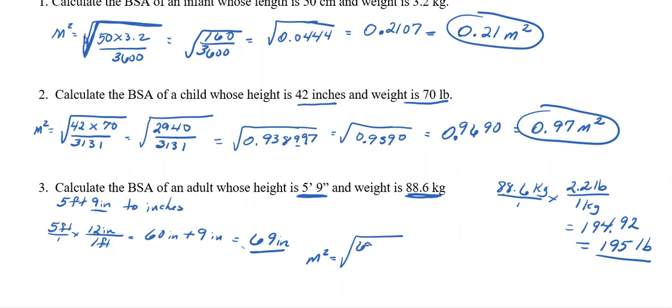So I've got 69 times 195 over 3,131. So 69 times 195 gives me 13,455. Divide that by 3,131. And I'm going to get the square root of 4.2973. And when I take the square root of that, I'm going to get 2.07 meters squared.